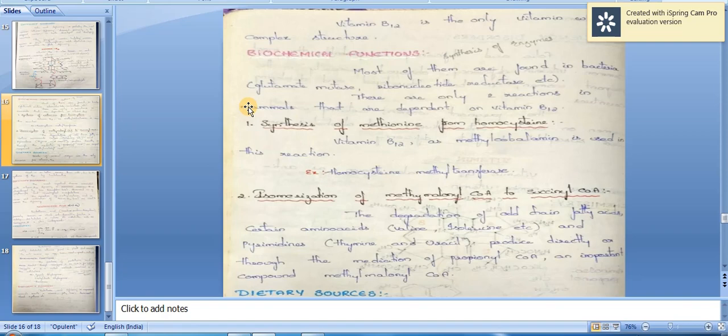Vitamin B12 is present in the diet in a bound form to proteins. B12 is liberated by enzymes in the stomach. The dietary source of B12 is known as extrinsic factor of Castle.